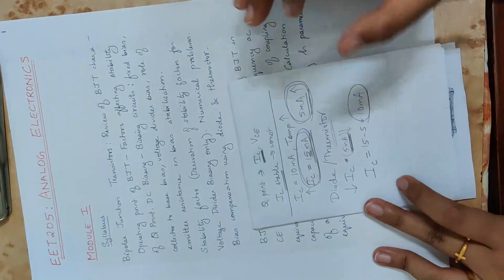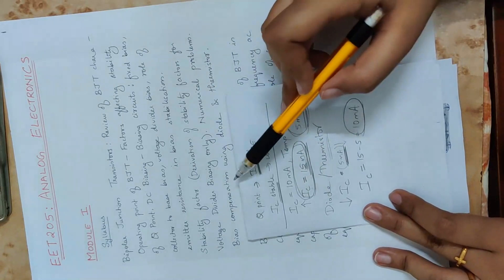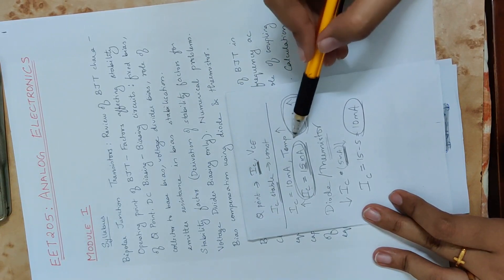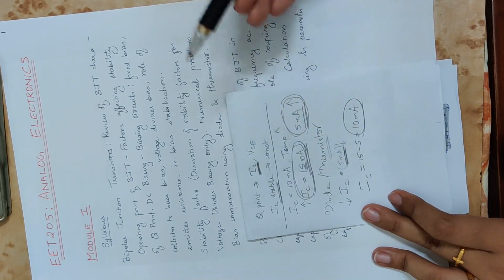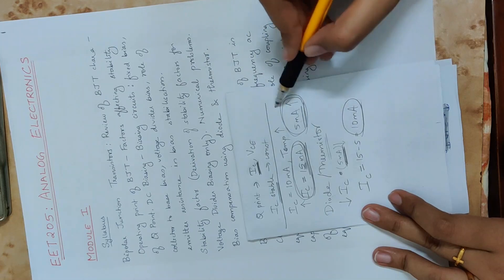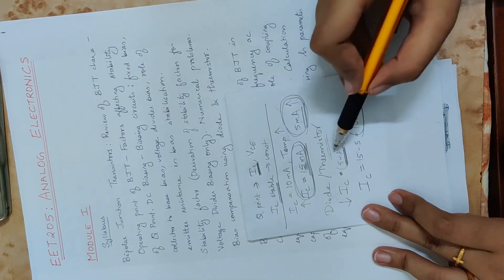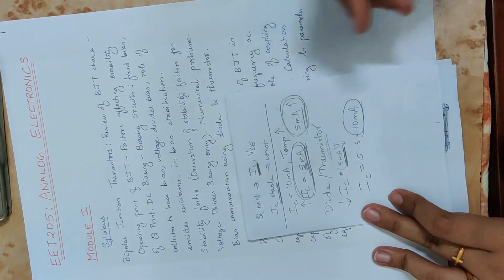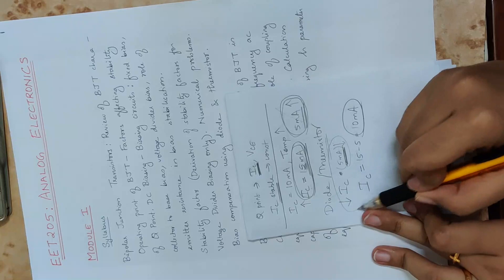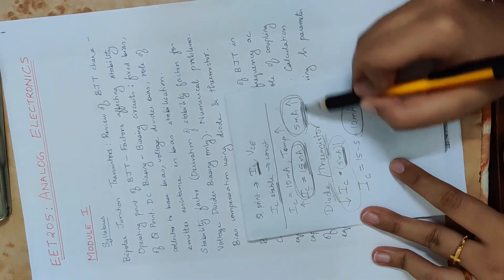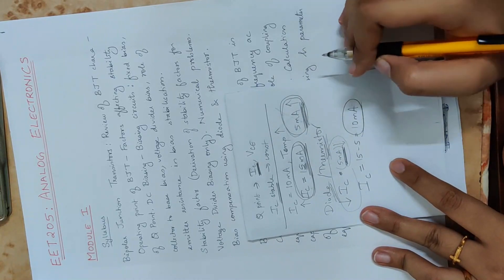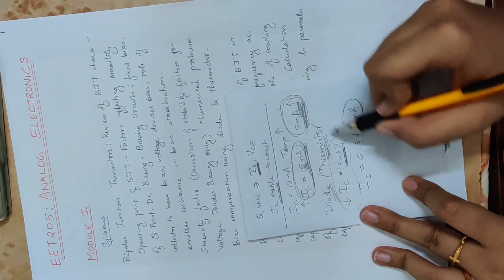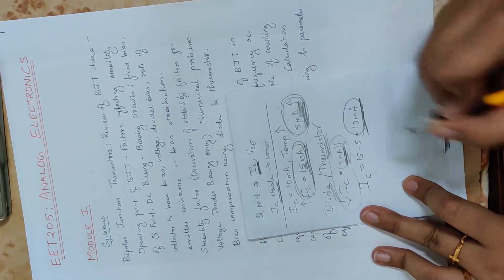That is bias compensation. When temperature increases and changes the collector current, we use diodes and thermistors to compensate. This increase in collector current is compensated — we decrease the collector current by 5 mA.